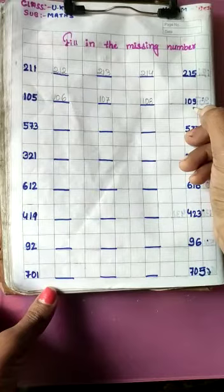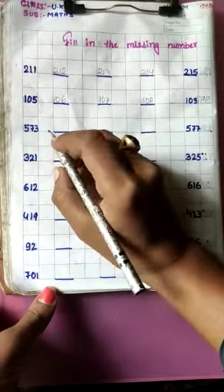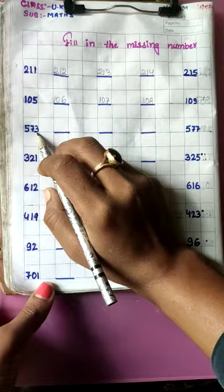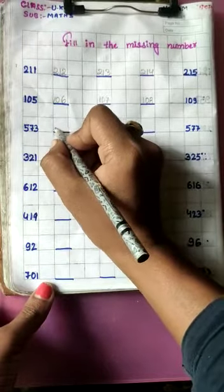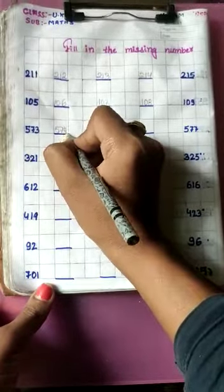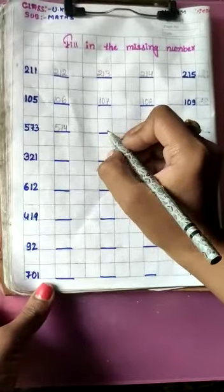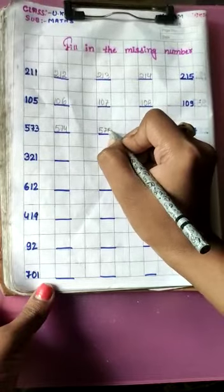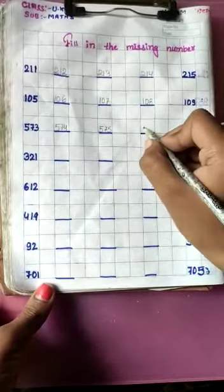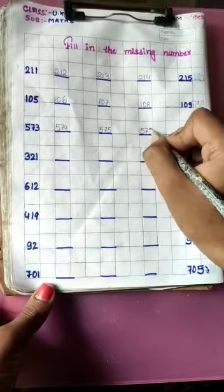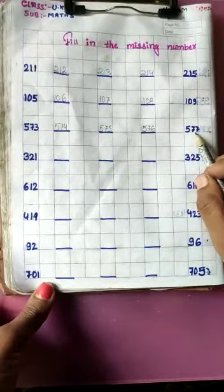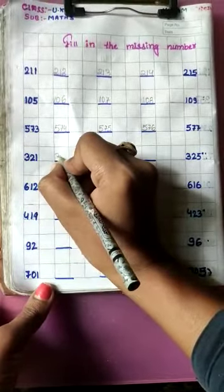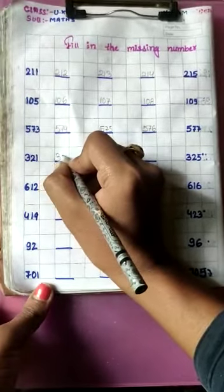Now there is written 109. Now next line: 573. After 573 — which number is missing? 574. Now next line: 321. After 321 — 322.